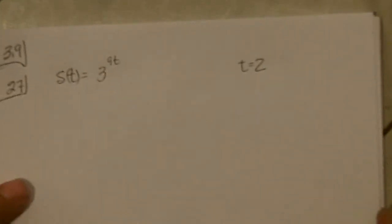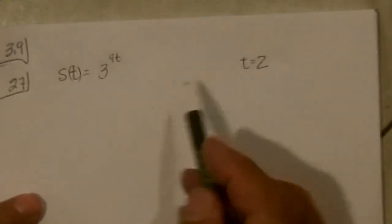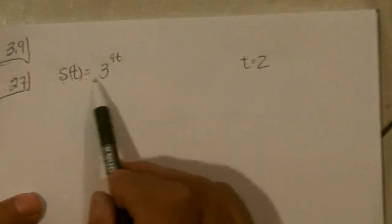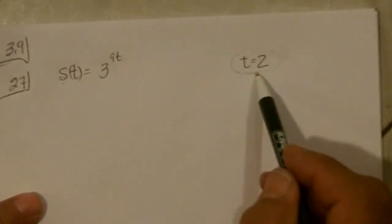Alright, section 3-9, number 27. We're supposed to find the tangent line to S at T equals 2.